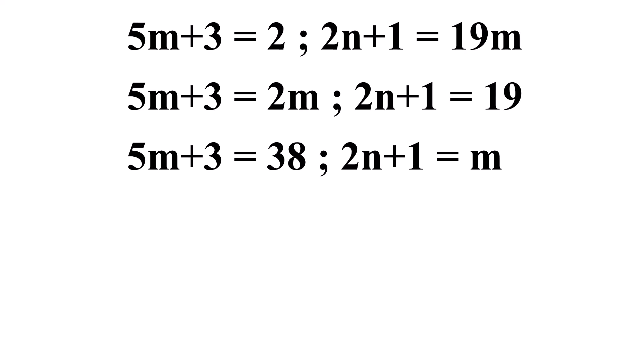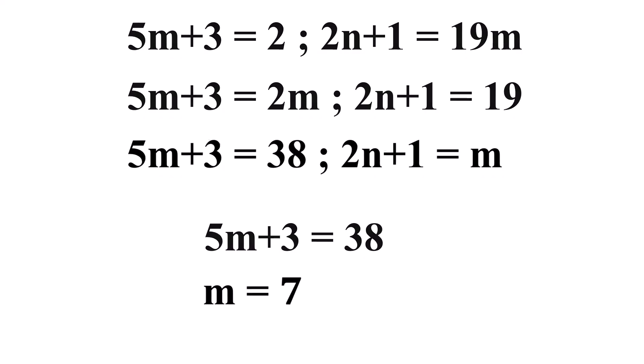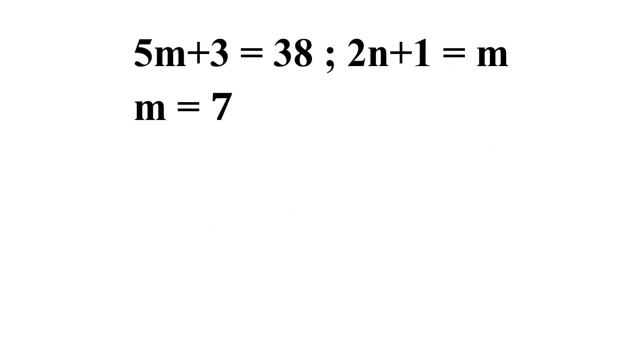Last case, 5m plus 3 equals 38. Here m equals 7, and that's the value of m. Now substitute the value of m: 2n plus 1 equals m, or 2n plus 1 equals 7. So the value of n is 3.